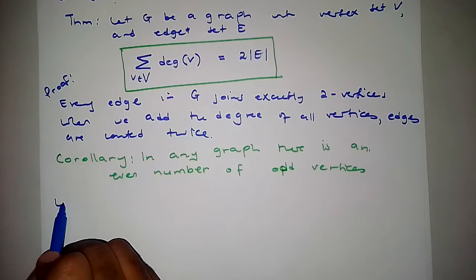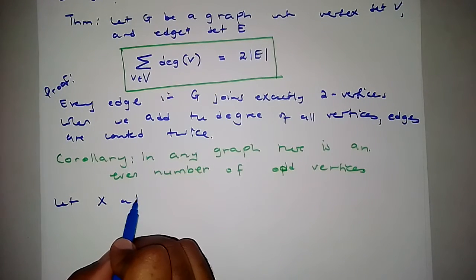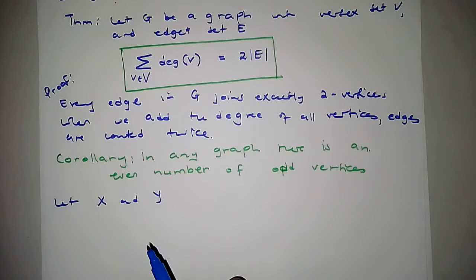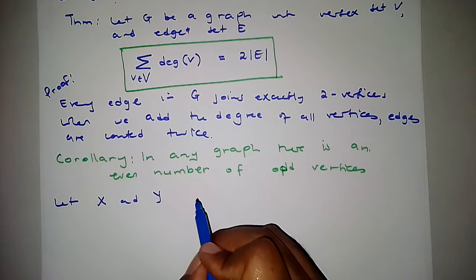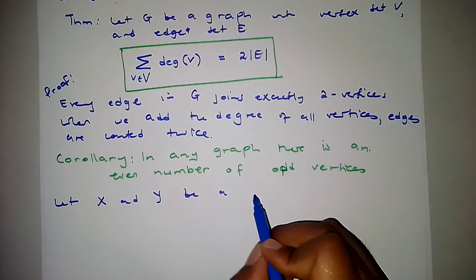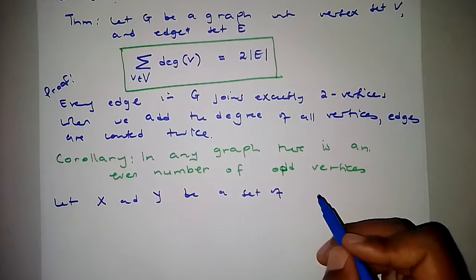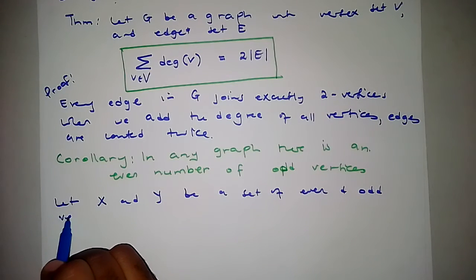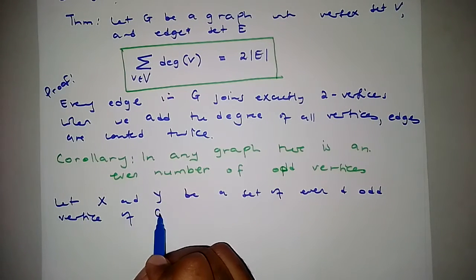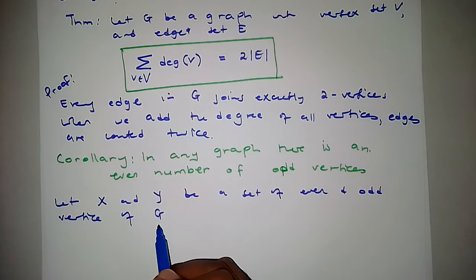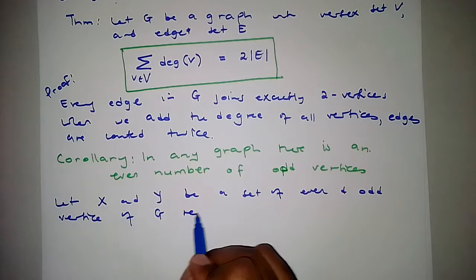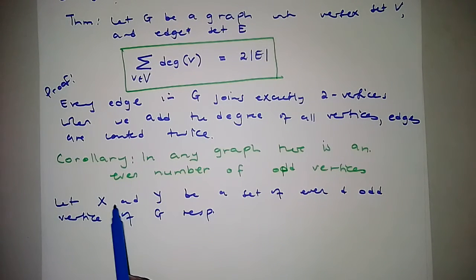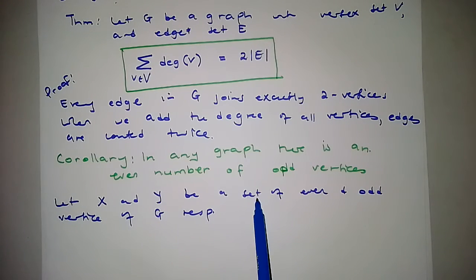To prove this, let X and Y — or whichever letters you prefer — be the sets of even and odd vertices of graph G, respectively. So X is the set of even vertices of G, and Y is the set of odd vertices of G.